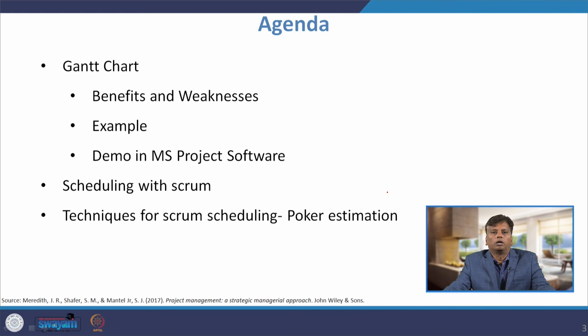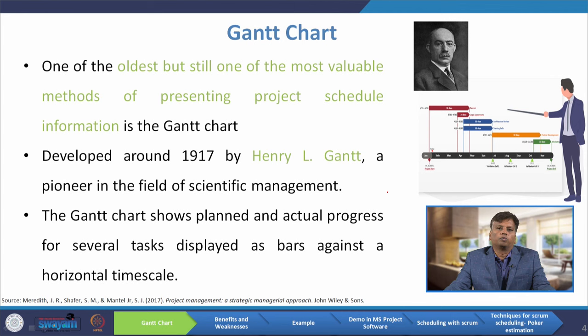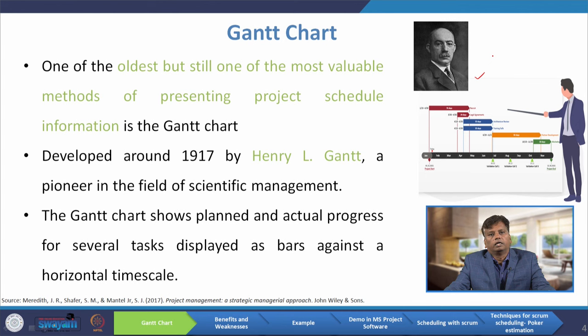One of the oldest but still one of the most valuable methods for presenting project schedule information is the Gantt chart. It was developed around 1917 by Henry L. Gantt, a pioneer in the field of scientific management. The Gantt chart shows the planned and actual progress for several tasks displayed as bars against a horizontal timeline.